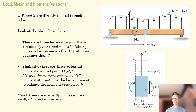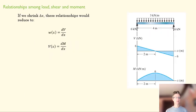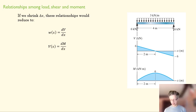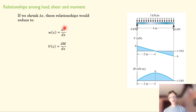The change in moment is related to how much shear there is at that section. If we shrink these delta x's and get differential equations, we find: dV/dx = w, and dM/dx = V. The change in shear is proportional to w, and the change in moment is related to shear.